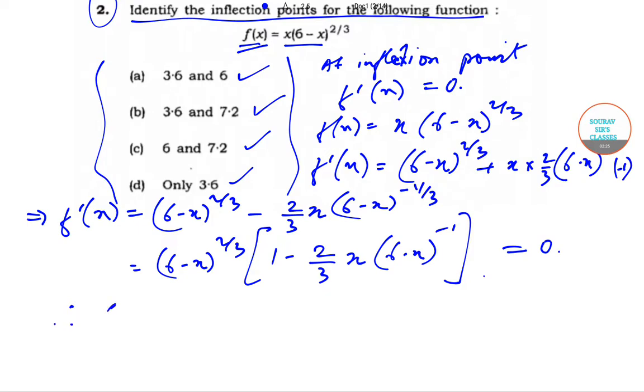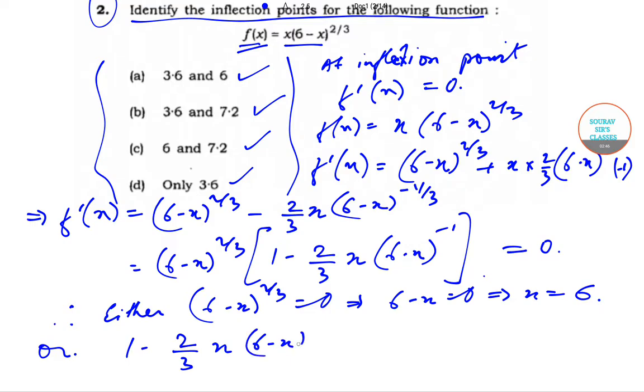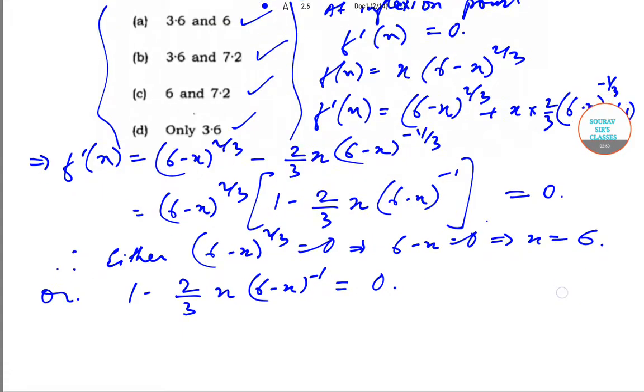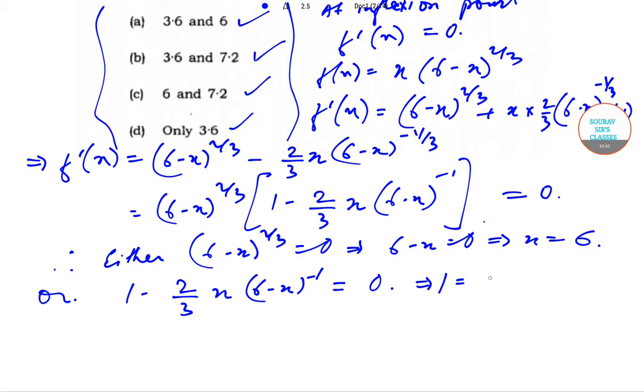6-x = 0, or 1 - 2/3 x/(6-x) = 0. So that will imply that 1 = 2/3 x/(6-x).